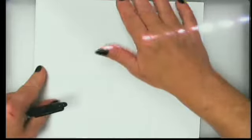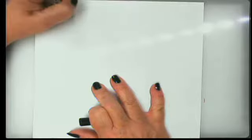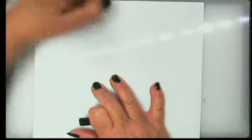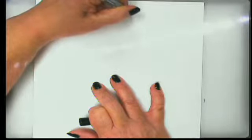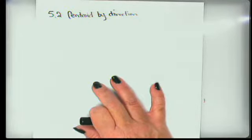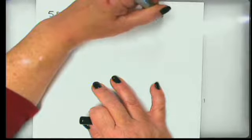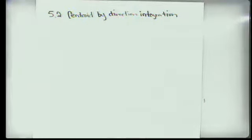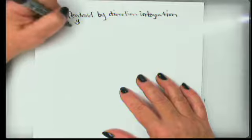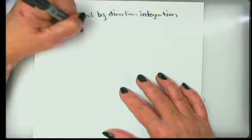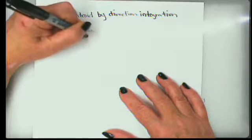Let's come over to the document cam. Section 5.2: centroid by direct integration. The theory is pretty simple, but the execution is what we need to concentrate on. When we talk about centroids, we are talking about that geometric point that balances out all of the areas about that particular point. So if we have consistent thickness and consistent density of a material, the centroid will correspond with the center of mass and the center of gravity. But today we're talking about the geometric concept.